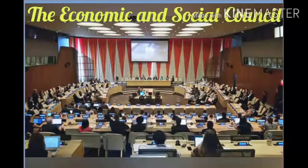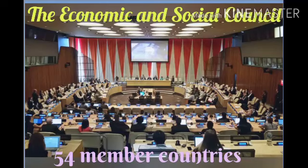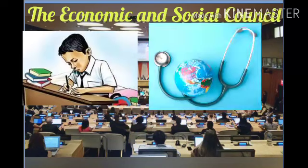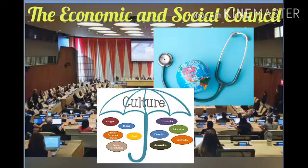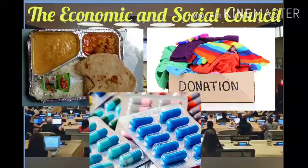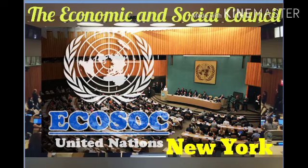The third organ is the Economic and Social Council. This organ coordinates the economic, social, and cultural work of the United Nations. It has a total of 54 member countries. The Economic and Social Council provides help to the developing countries for the promotion of education, health, and culture. It also provides food, clothes, and medicines to people affected by natural disasters. The headquarters of the Economic and Social Council is situated in New York.